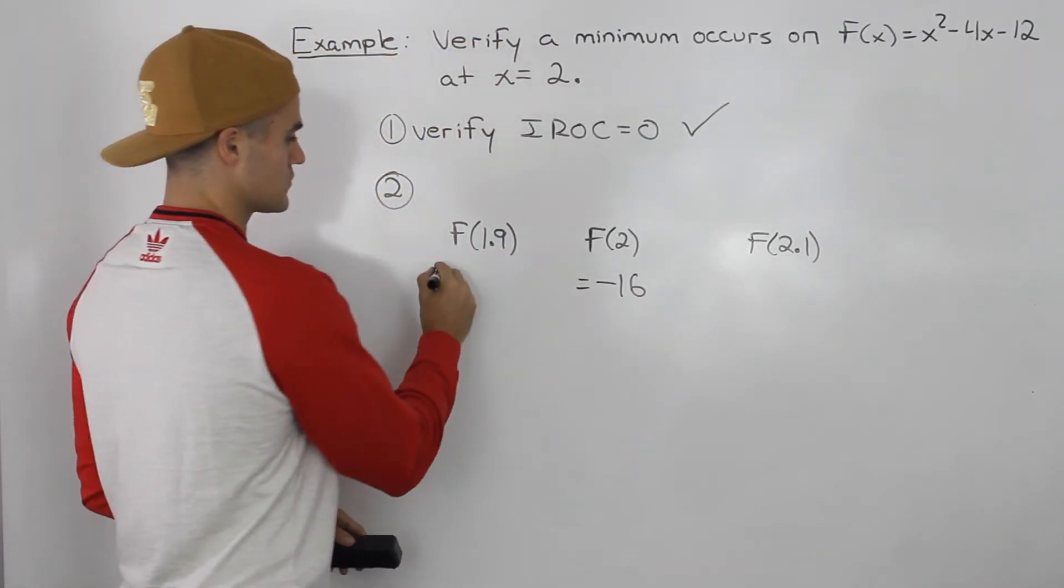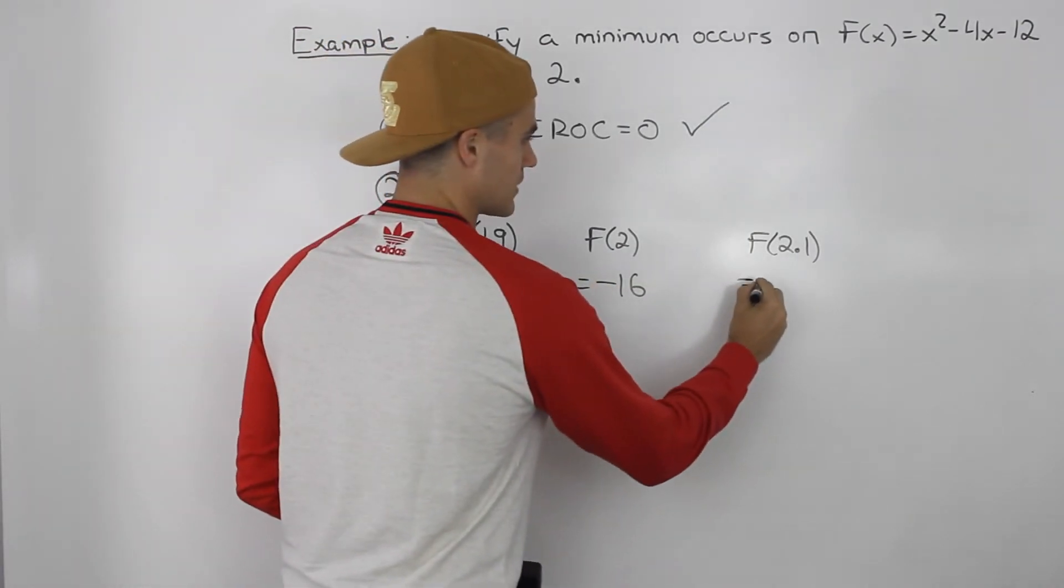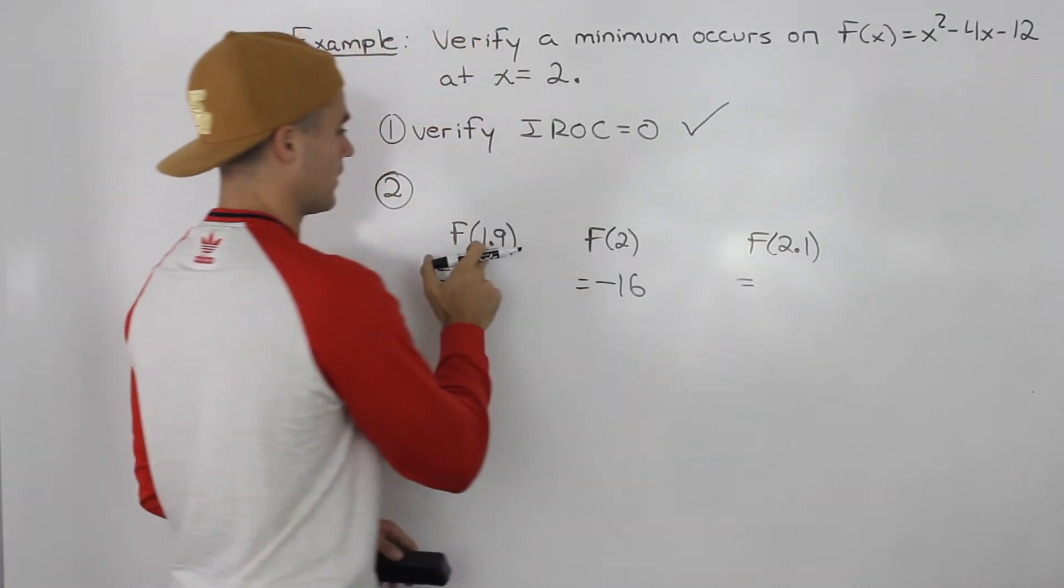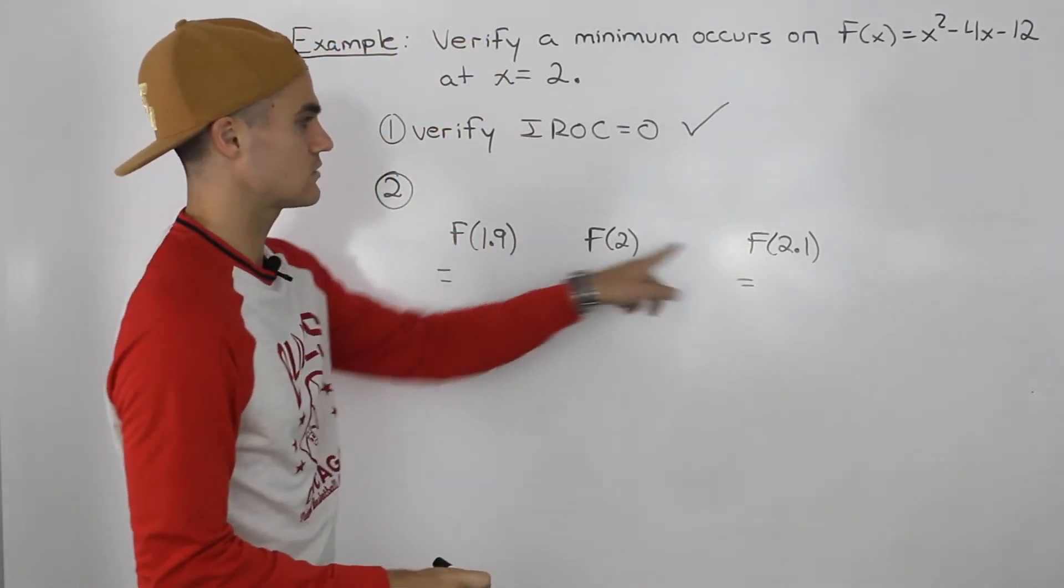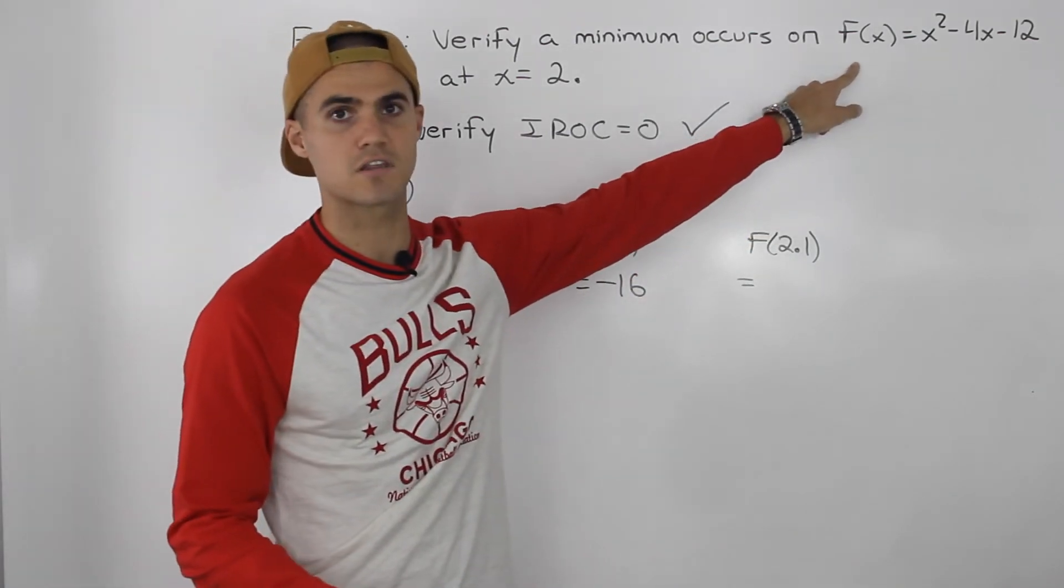Now what we have to do is find out what the y values are going to be at an x value of 2.1 and 1.9. So we just take those x values and plug them into the function we're given.